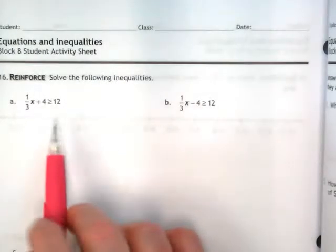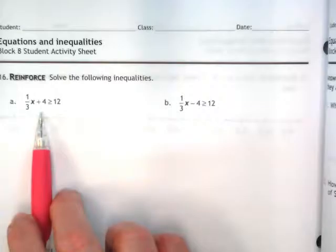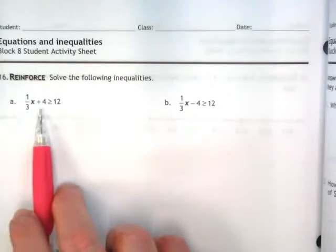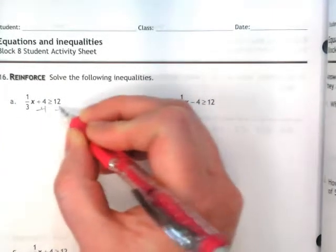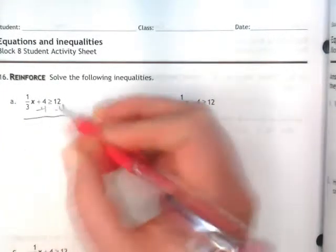Okay, when I'm looking at this, I'm looking for what can I add or subtract first, and I see a positive 4 here, so that means I need to subtract the 4 from both sides of the inequality. That's going to leave me with 1 third x is greater than or equal to 8.